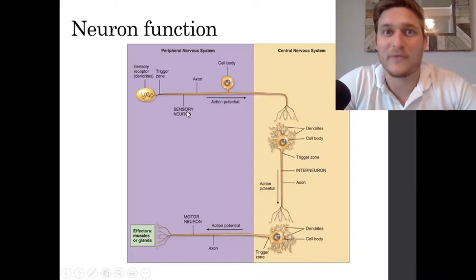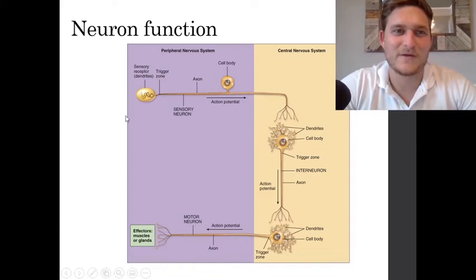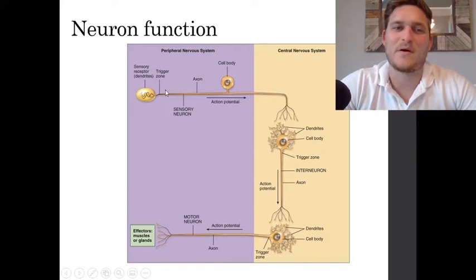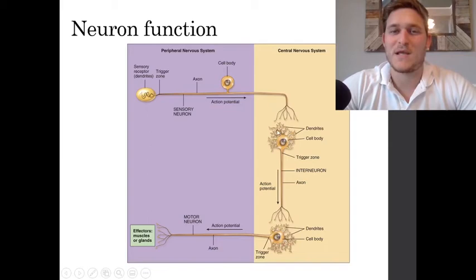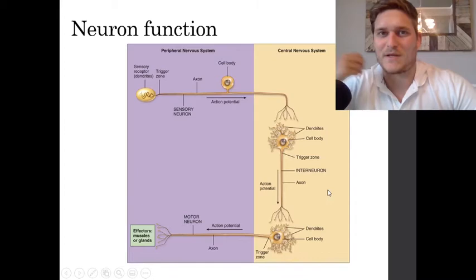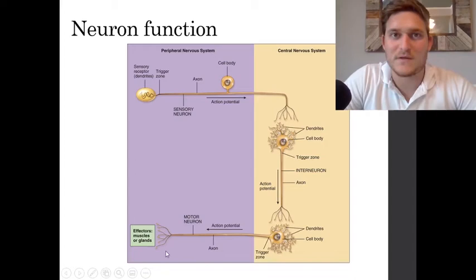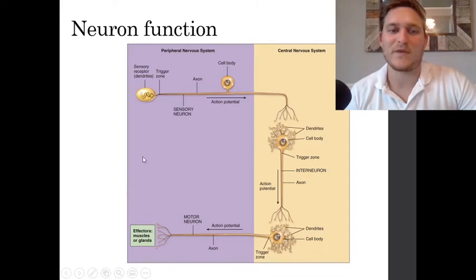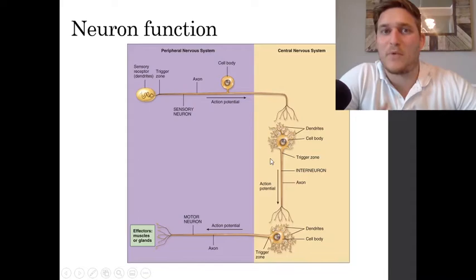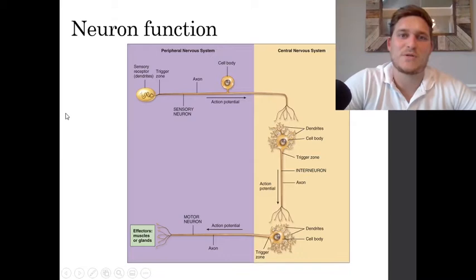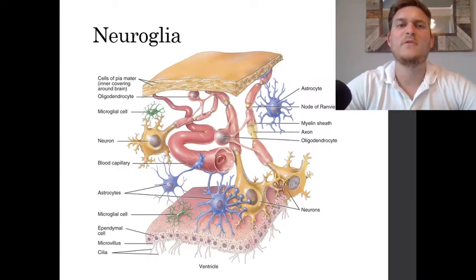If we want to see the nervous system in action, let's think about a painful event — something like stepping on a Lego. You're going to have noxious receptors in your foot that pick up on this stressful stimuli. That pain information gets sent via sensory neurons from the peripheral nervous system to the central nervous system, where it's processed and delivered via interneurons up to a section of the brain. The brain then processes that information and delivers a motor output — probably drawing your foot away from that painful stimuli by contracting those muscles via motor neurons to those skeletal muscles.